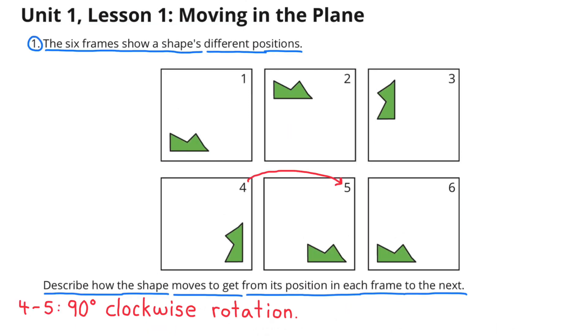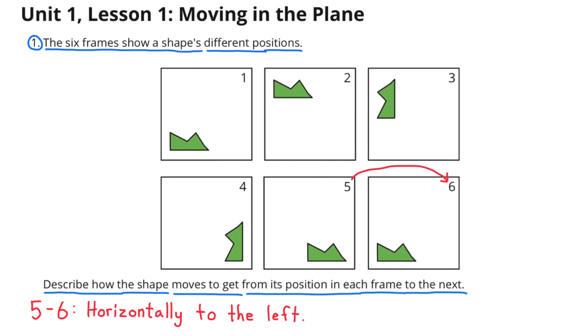From frame 4 to frame 5, the shape rotates 90 degrees clockwise. From frame 5 to frame 6, the shape moves horizontally to the left.